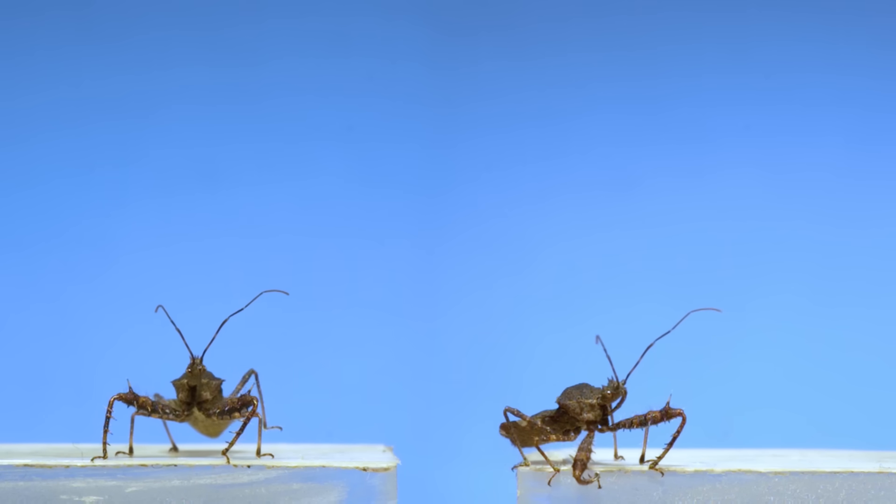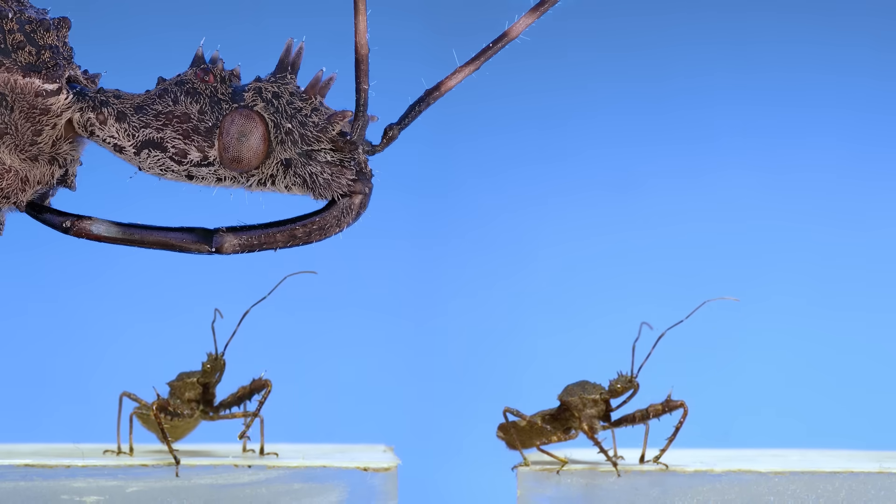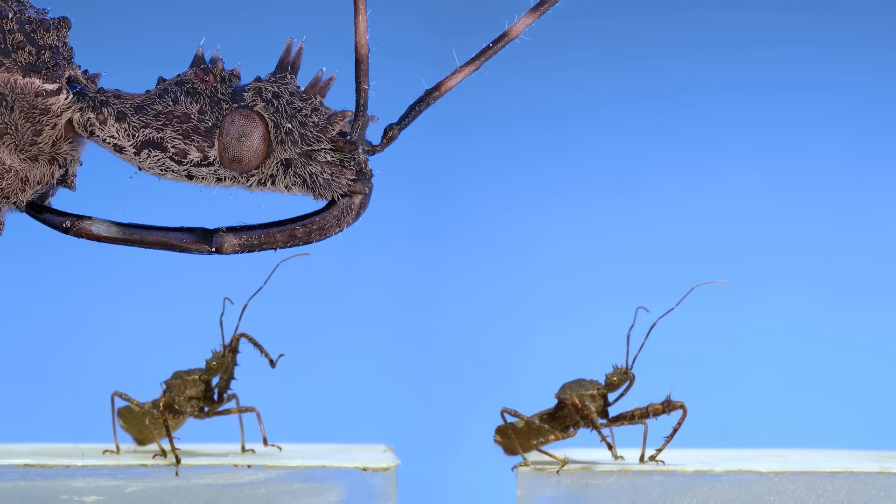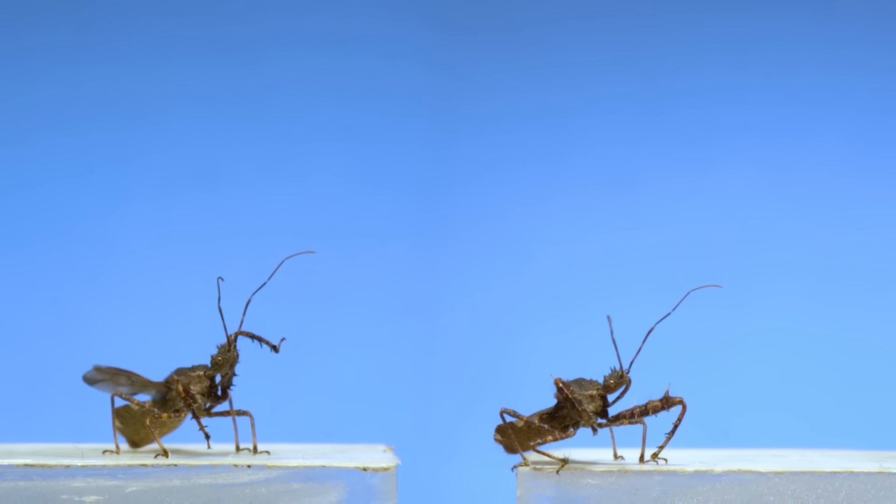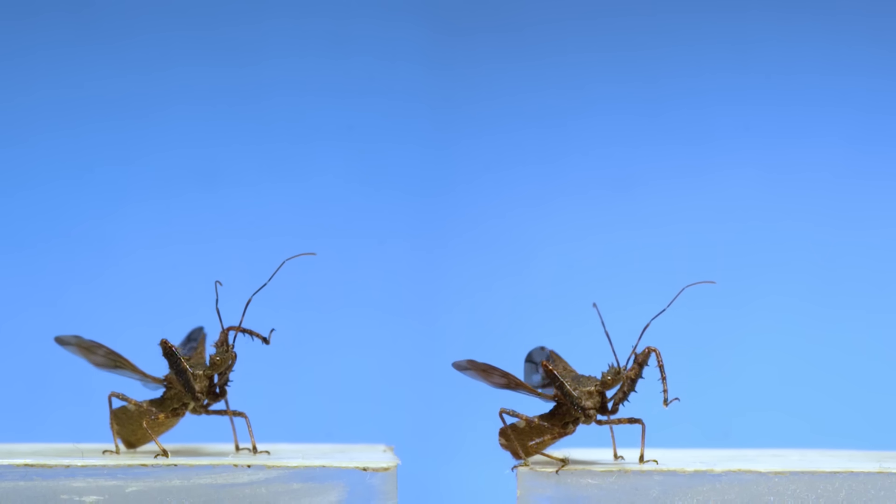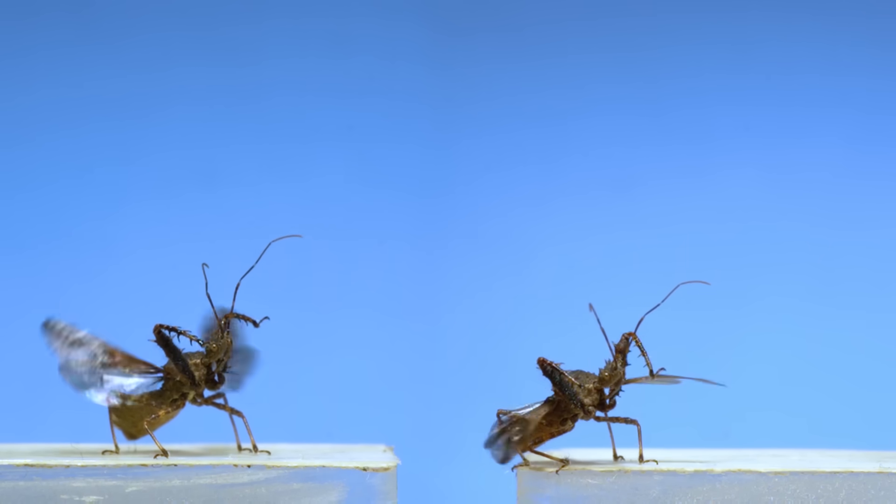I saved the coolest looking insect for last, a spined or crowned assassin bug, named after the intimidating set of spikes on the top of its head. These things fly in a way that totally suits an insect that makes a living impaling and liquefying the guts of other insects.